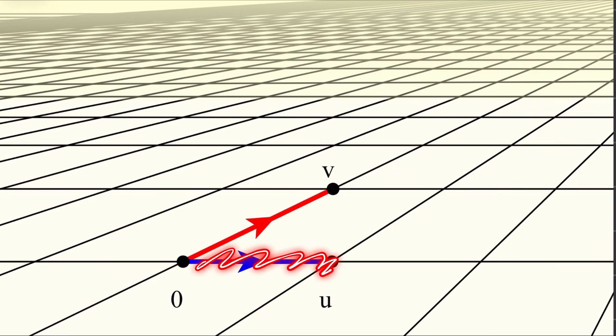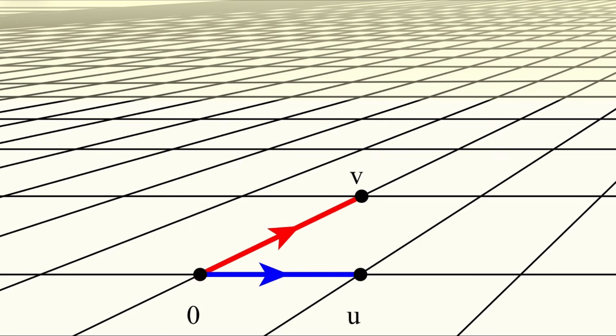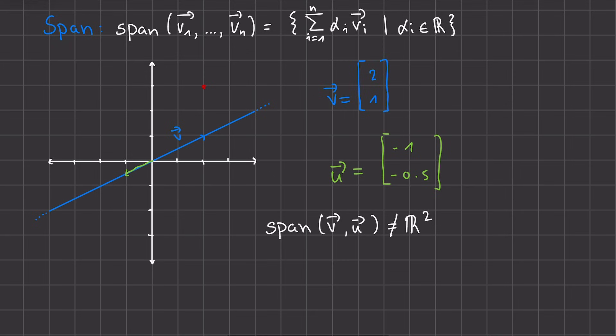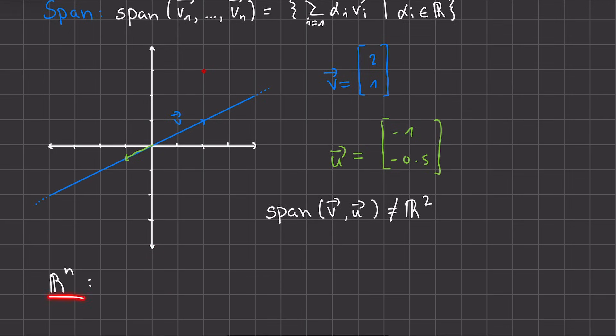For example, if we disregard this vector u, and we just go along this vector v, then we have as the span a line in our R³. And again, we can also just have the zero. Now we saw that there's three different options for our R², and there's four different options for our R³. For our R^n, we have n plus 1 different options for how our span looks.